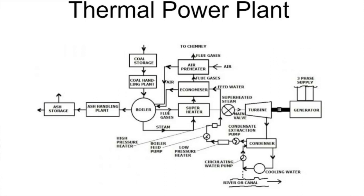Finally, regarding efficiency: the thermal power plant works on the principle of the Rankine cycle. Its overall thermal efficiency is very, very low — only about 20 to 30%. If you spend energy equivalent to 100 units, only about 30 units come out as useful electricity. This means there are very high losses inside the plant, and we will learn where these losses occur.